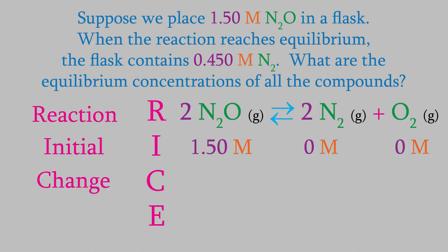C stands for the change in the concentration. We don't have that information yet, so we'll have to leave this row blank for now. And the last row is E. This is the equilibrium concentration.